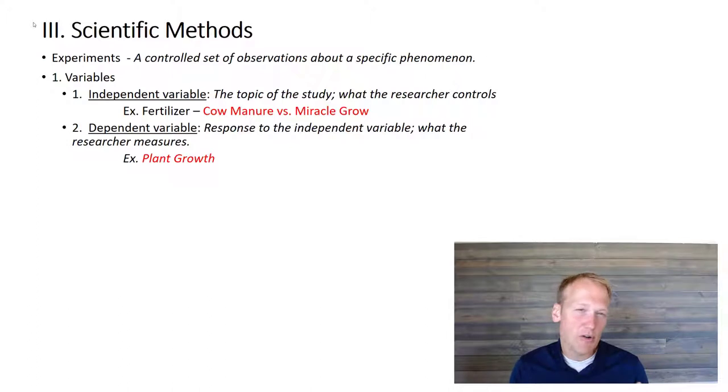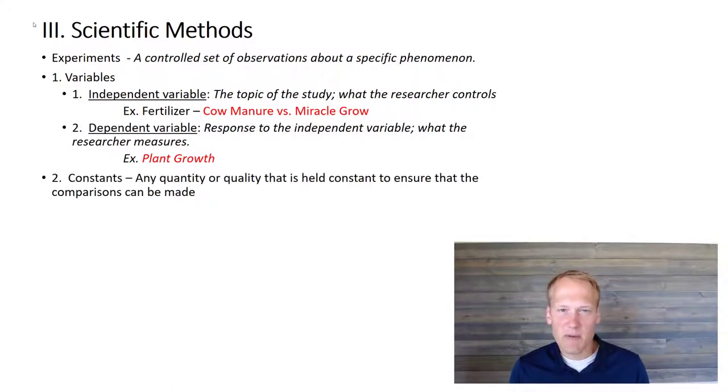We call the cow manure and Miracle-Gro, since that's what we're researching, we call that the independent variable. It's independent of everything else, and it's what we're studying. The dependent variable is the thing we're going to observe. In other words, what's going to change because of the variable that we put on the different experimental groups? And in this case, plant growth. You could measure how high the plants grew, you could measure how much fruit they produced, all kinds of different things.